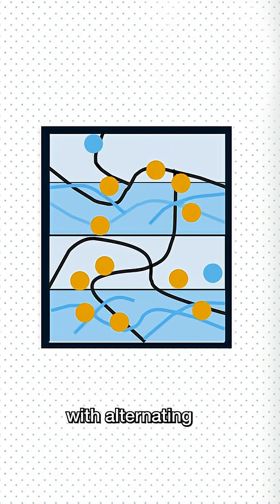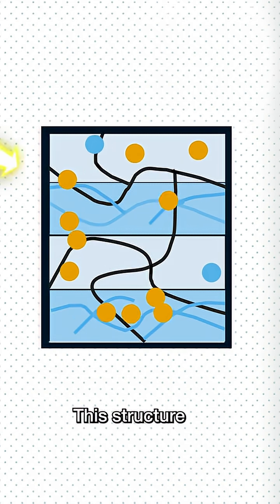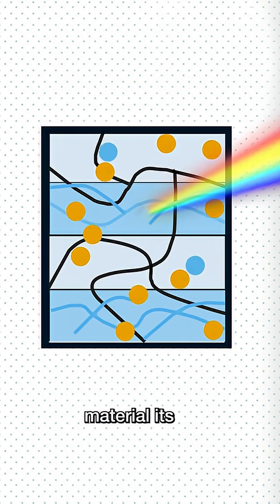Creating microscopic lines with alternating high and low refractive indexes. This structure diffracts light, giving the material its rainbow shimmer.